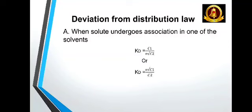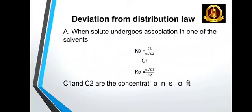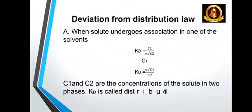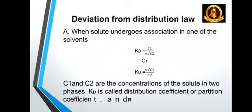Kd is equal to N square root of C1 by C2, where C1 and C2 are the concentrations of solute in two phases. Kd is called distribution coefficient or partition coefficient, and N is order of association.